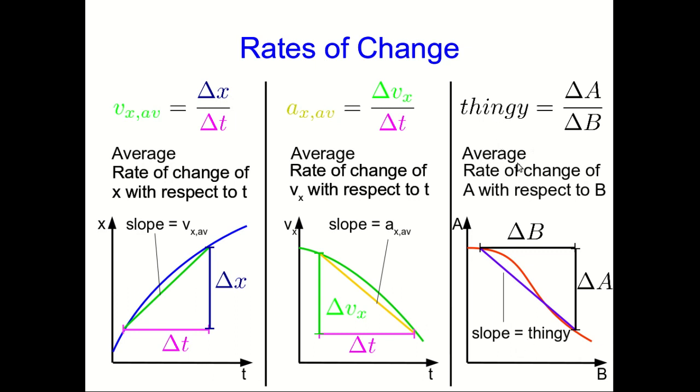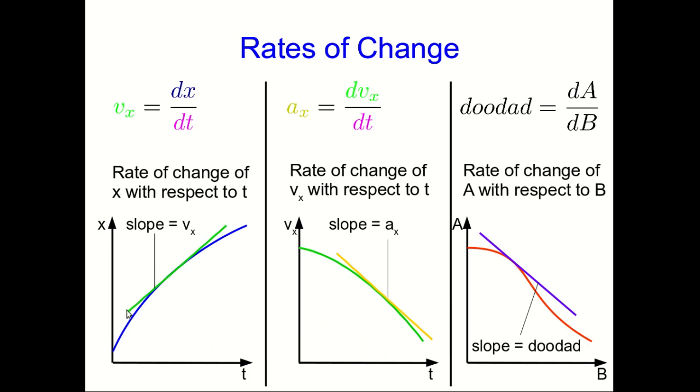If you don't want average rates of change, then if you're able to let these deltas get very small, you're able to approximate the slope of tangent lines to the graphs. And now you're looking at rates of change that aren't average. They're what we would call instantaneous rates of change, and we would note them as derivatives, like so.